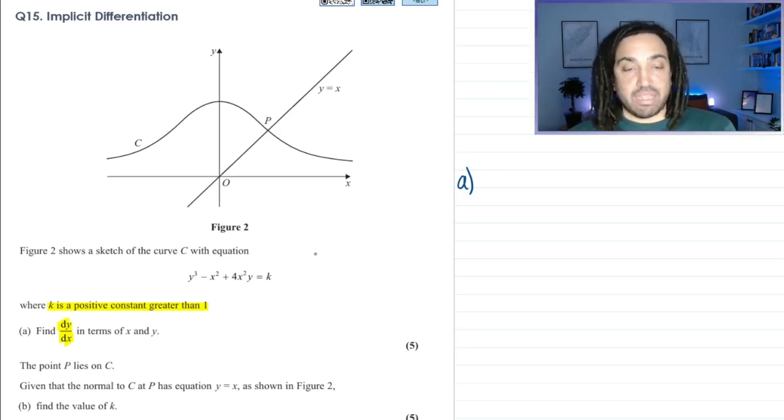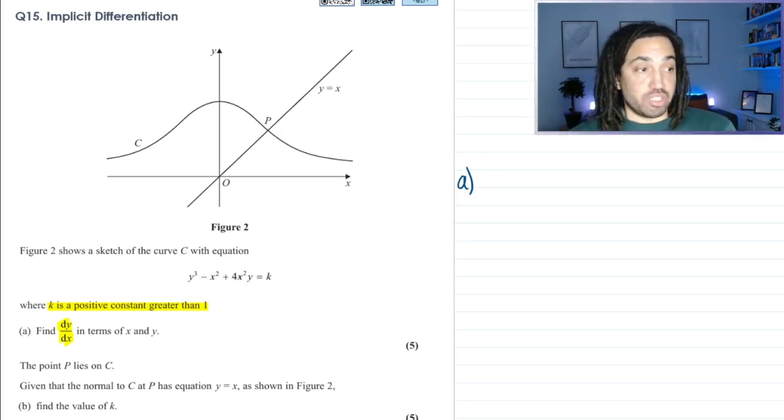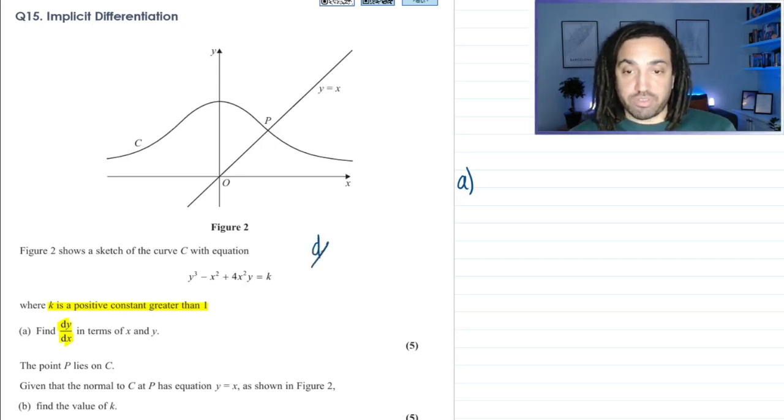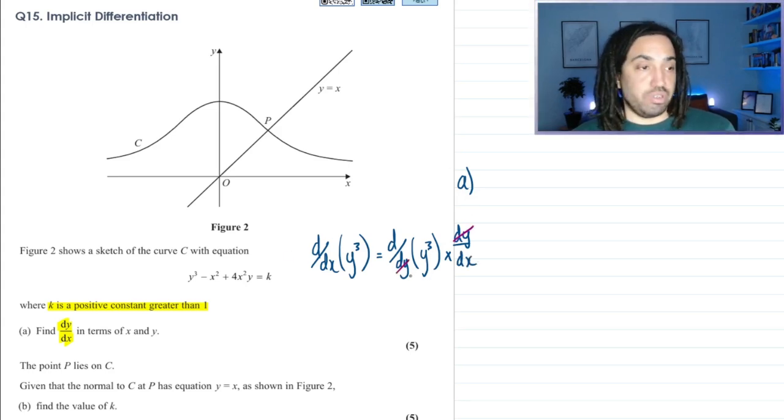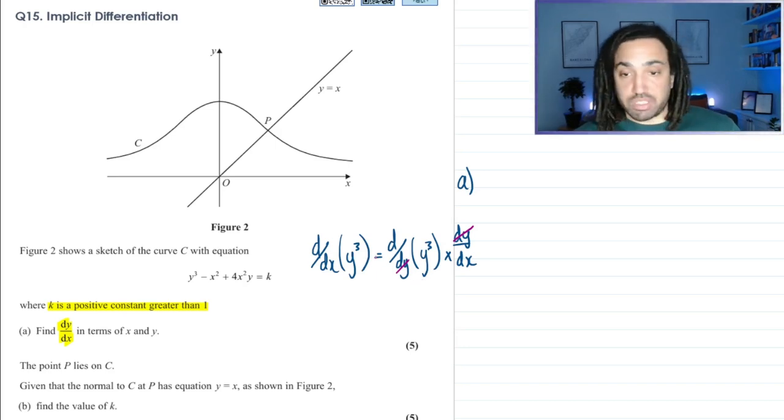So we're going to differentiate this function with respect to x. Now if we are differentiating a function of y with respect to x, then that's a bit tricky. What we really want to do, to make it much easier, is differentiate with respect to y—that's nice and easy—but these two things aren't equal. To make them equal, we multiply by dy/dx so that this cancels out there, and now these two parts, left-hand side and right-hand side of the equation, are equal.